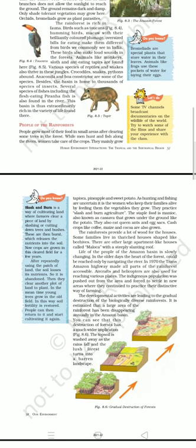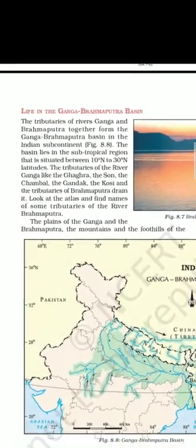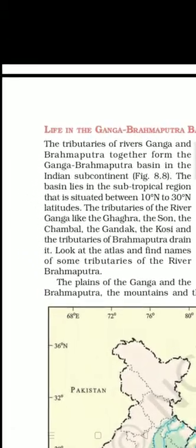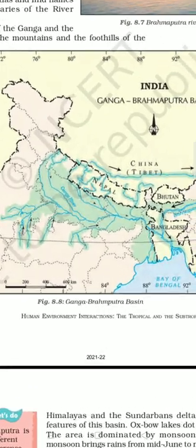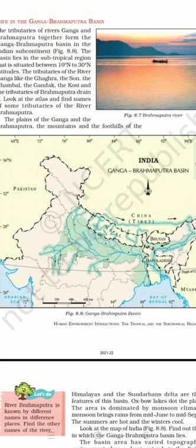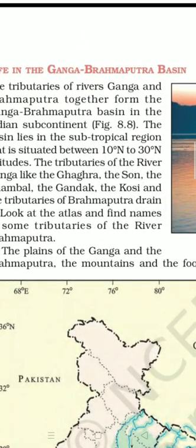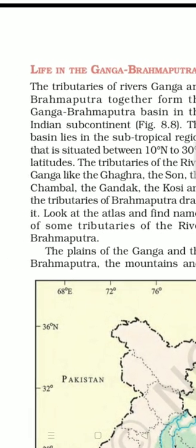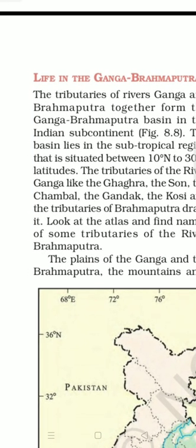Now we talk about another basin — the Ganga-Brahmaputra Basin, which is in India. It is also situated near the equator, as you can see on the map. In this basin you will find different types of landforms — plateaus, plains, and mountains. The tributaries of the Ganga and Brahmaputra, which spread across the country, are known by different names like the Ghaghra, Chambal, Gandak, and Kosi. Tributaries are channels that branch off from the main river and flow to different places.